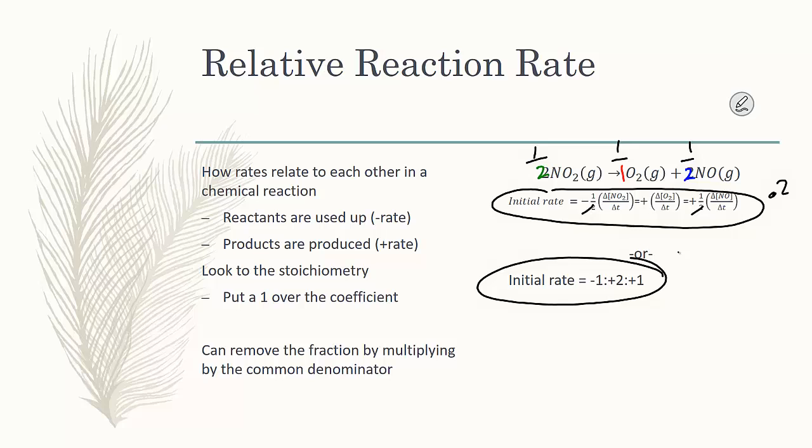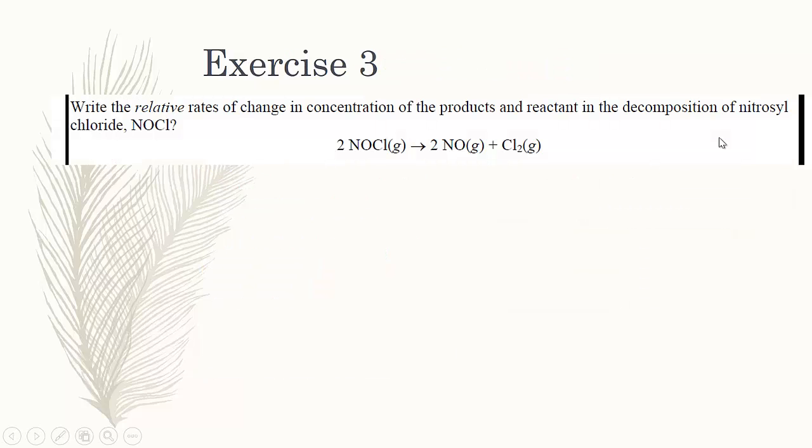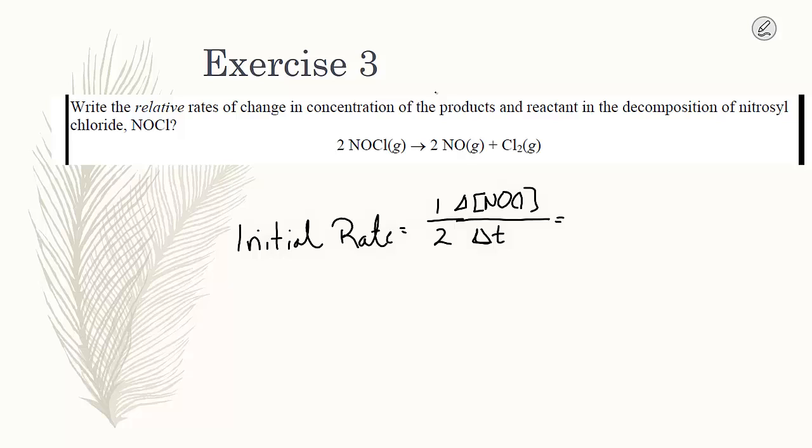Let's do exercise 3 first. Exercise 3 in your packet has us write the relative rate of change. So, the initial rate at the moment of mixing would be 1 over 2 of the change of nitrosyl chloride, over some unit or change in time. And it's going to be negative as that is a reactant. That's going to equal a positive change in nitrogen monoxide's concentration over 2 times that change in time.